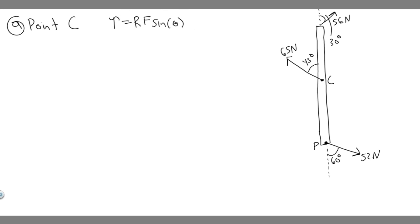So how do we calculate the net torque? Net torque is just going to be the torque at each of these points added up. We have three different forces on each point, so we just add up the torque contributions. Let's go ahead and start with point C.